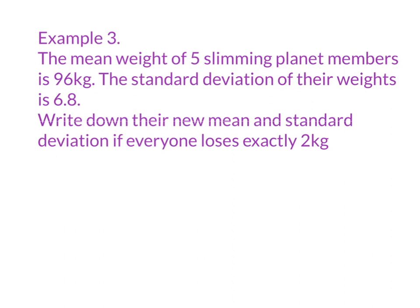The final scenario — we already kind of did these in my previous video. We have the mean weight of five Slimming Planet members is 96 kilograms and the standard deviation of their weights is 6.8. Write down the new mean and standard deviation if everyone loses exactly two kilograms. I did an example about me and my brother always being two years apart — two years ago our standard deviation would have been the exact same, still always the same spread. So if everyone loses exactly two kilograms, the standard deviation isn't going to change. The new standard deviation is still 6.8. If everyone loses exactly two kilograms, the average weight is just going to go down by two, so 96 would go down to 94 kilograms.